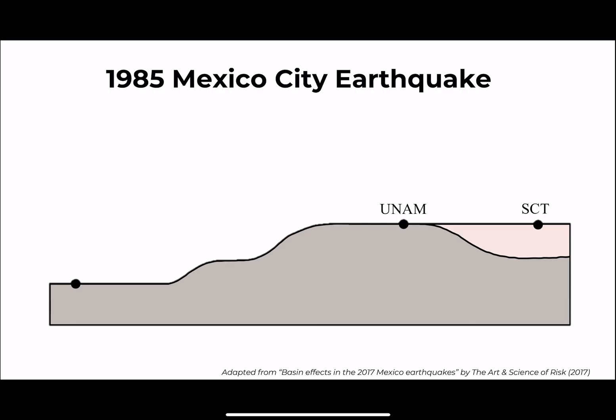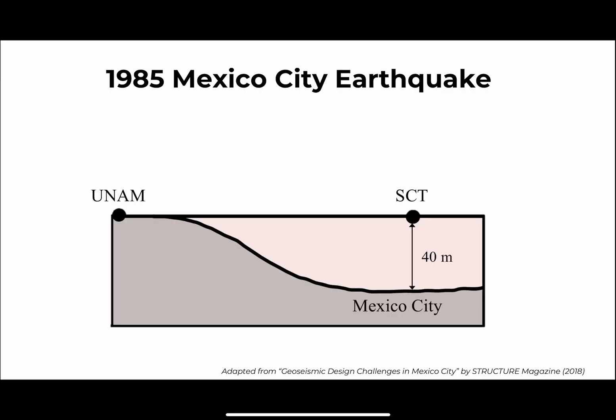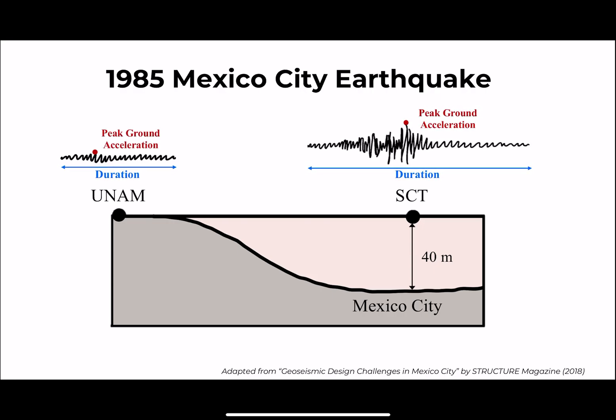A real-life example of this phenomenon was observed in the 1985 Mexico City earthquake. Even though the epicenter of the earthquake was roughly 400 kilometers away from Mexico City, there were still significant damages caused by the amplification of ground motions due to local soil conditions. Mexico City is on top of a shallow deposit of softer soils underlain by steep rock. The ground motions at the top of the rock were amplified as they traveled through the softer soils below Mexico City, increasing the peak ground acceleration and the duration of the motions, which caused more damage in Mexico City than other locations that were actually closer to the earthquake's epicenter.